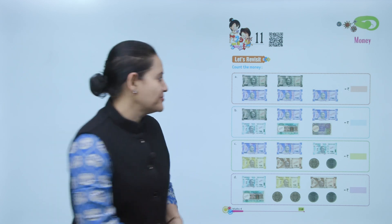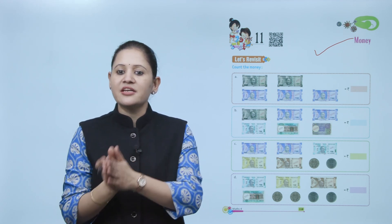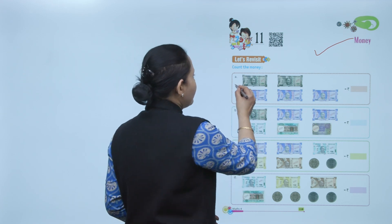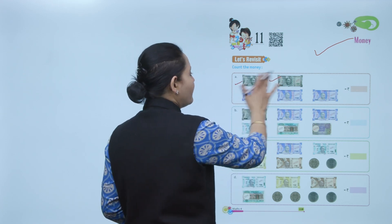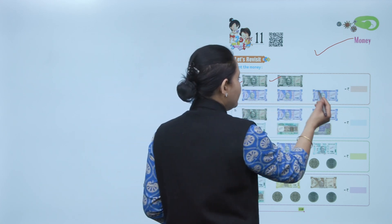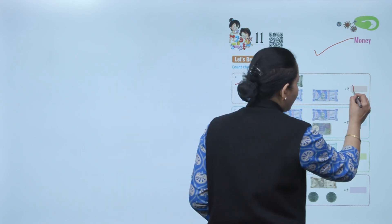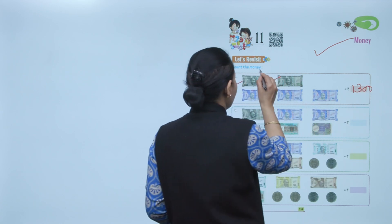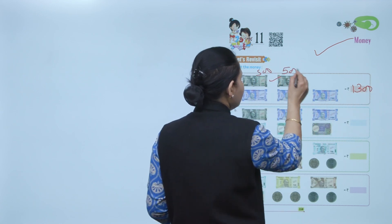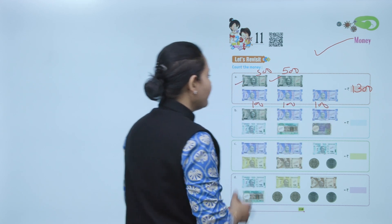Hello kids, welcome to today's maths class. Today we'll do money. Let's revisit counting money — some notes are given and we have to count them and write the amount. One 500 rupees note plus one more gives 1000 rupees. Then 100 plus 100 plus 100 is 300. So total is 1300 rupees: 500 plus 500 plus 100 plus 100 plus 100 equals 1300.